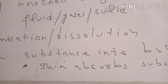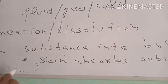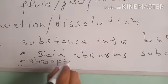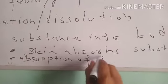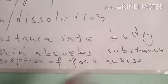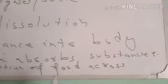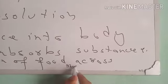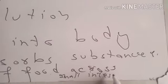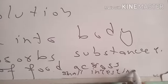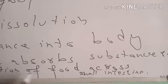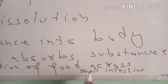Another example of absorption in our body is the absorption of food across small intestine. Food is digested until it reaches the last part of small intestine, and after the digestion of the food it is absorbed into the blood which is present around the small intestine.